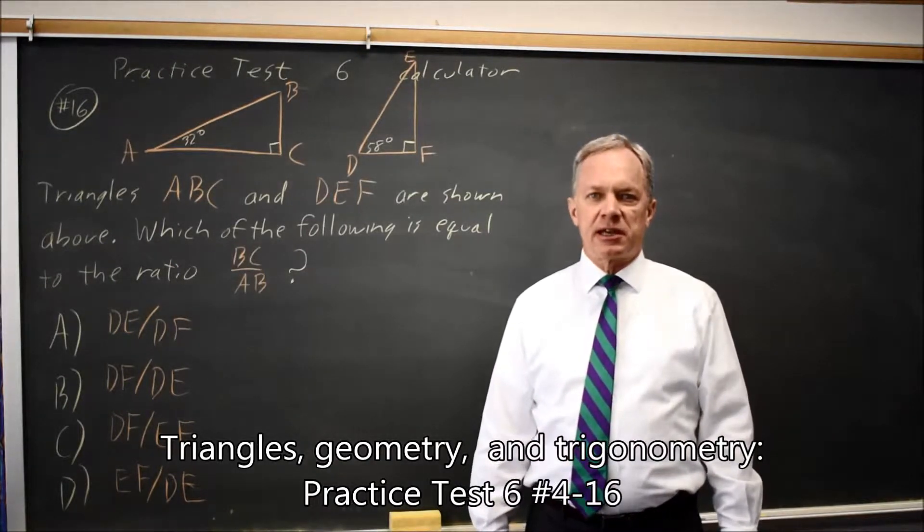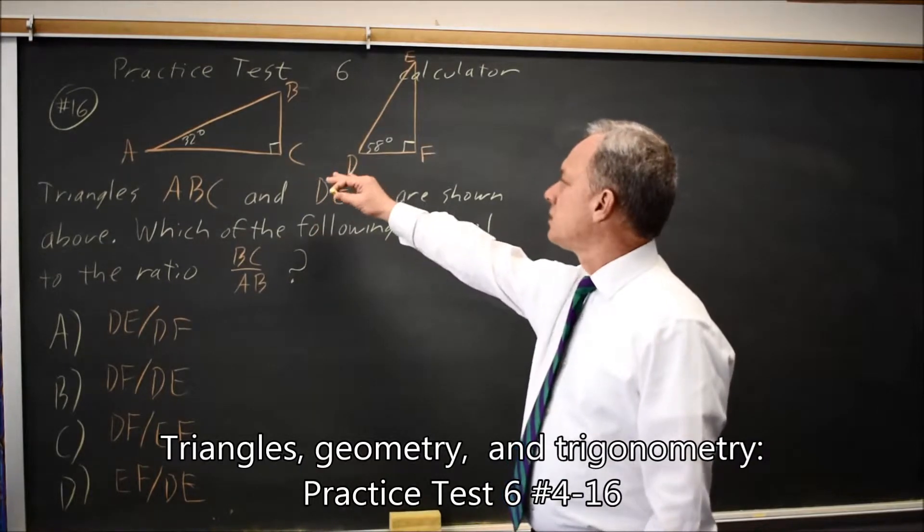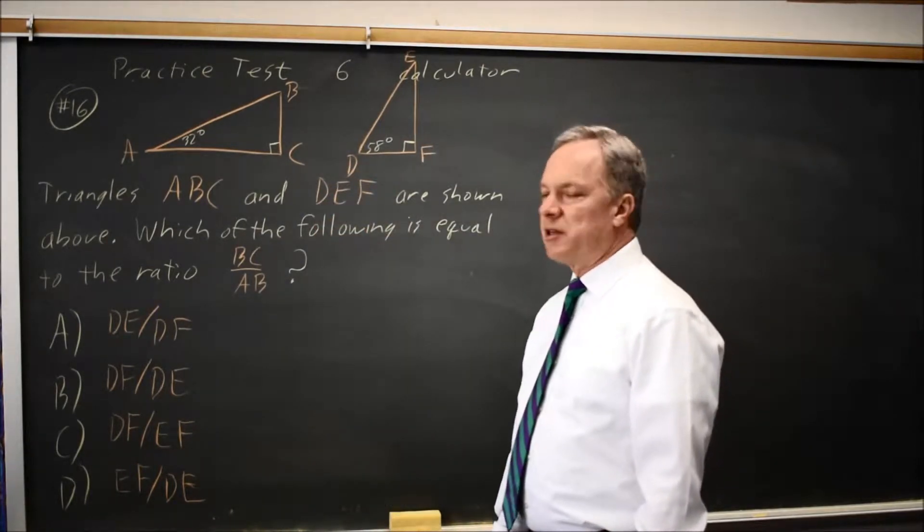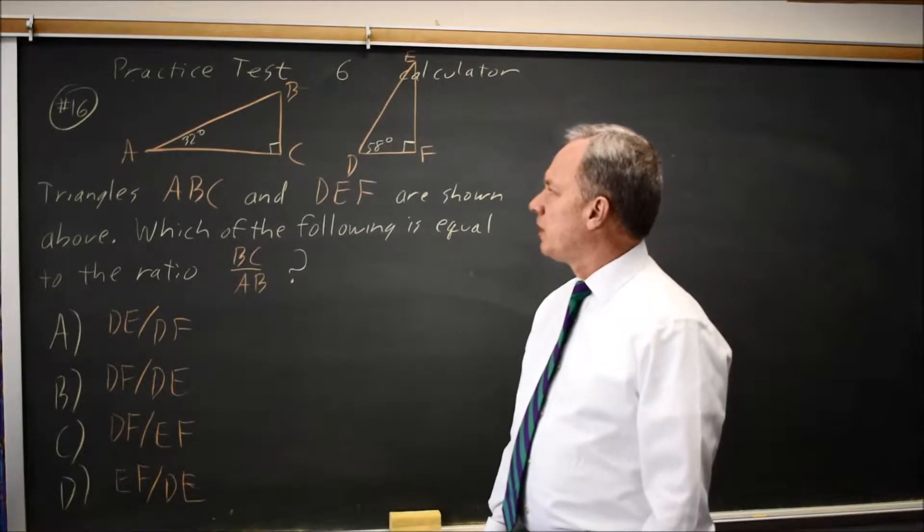This is SET Test 6, Calculator Question Number 16. The board gives us two triangles and asks which of the following is equal to the ratio BC over AB.